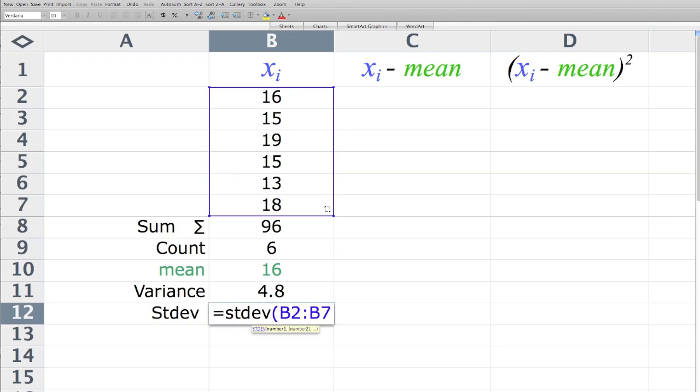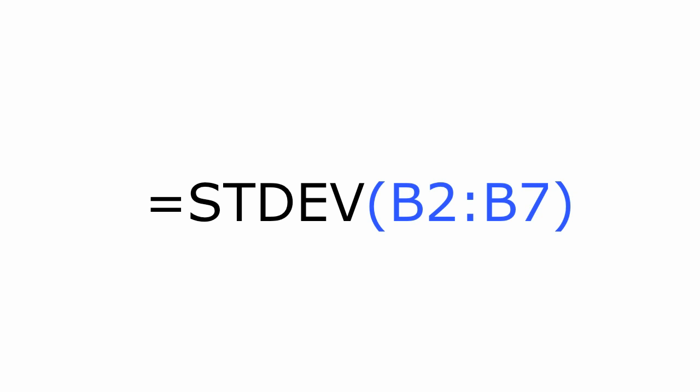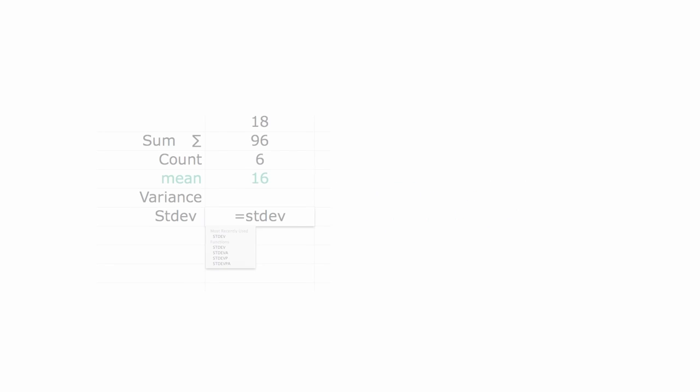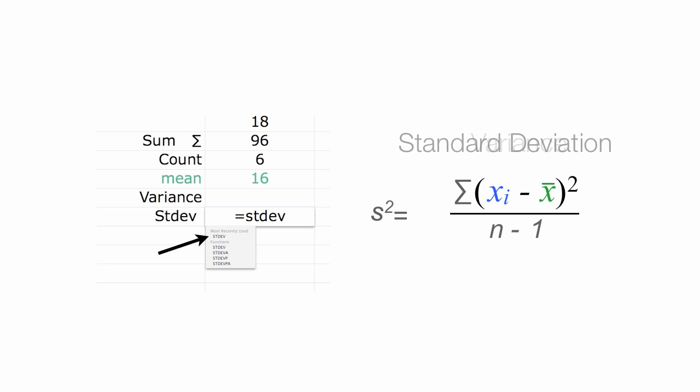I'm going to type in the second value and drag down to B7, close parentheses. Just like variance, you'll see that standard deviation has multiple choices. In this case, I'm using the sample standard deviation versus the population standard deviation. And the difference is whether I divide by n minus one or just n. I have an entire video explaining degrees of freedom. You'll see the link below for that.